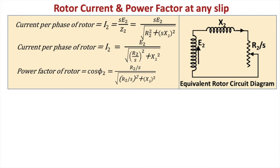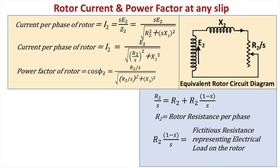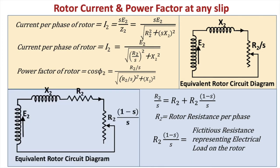The equivalent rotor circuit resistance R2/s can be split into two parts: R2/s = R2 + R2(1−s)/s, where R2 is the actual rotor resistance per phase and R2(1−s)/s is a fictitious resistance representing the electrical load on the rotor. The equivalent circuit thus shows E2 and X2 unchanged, with the rotor resistance divided into R2 and R2(1−s)/s.